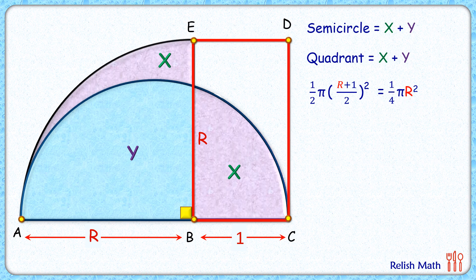Simplifying it, both sides π will get cancelled down, so we'll get (r + 1)²/8 equals r²/4, where 8 is from 2 times 4. Cross multiplying, we'll get (r + 1)²/r² = 8/4, so 8/4 is 2. Taking square root on both sides, we'll get (r + 1)/r is √2.